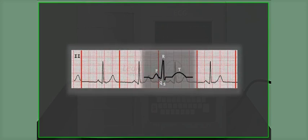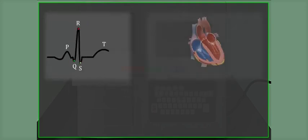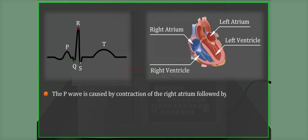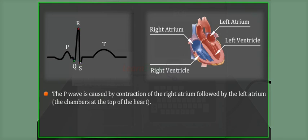The main blocks of heart and the waveform of heart functions are shown. The P wave is caused by the contraction of the right atrium followed by the left atrium, that is the chambers at the top of the heart.